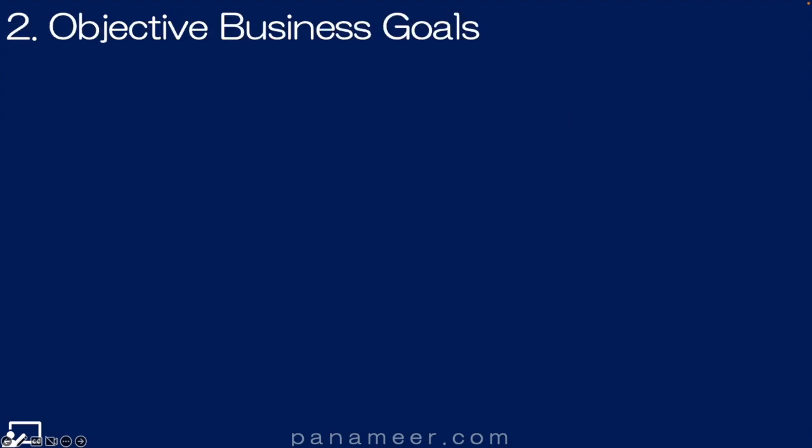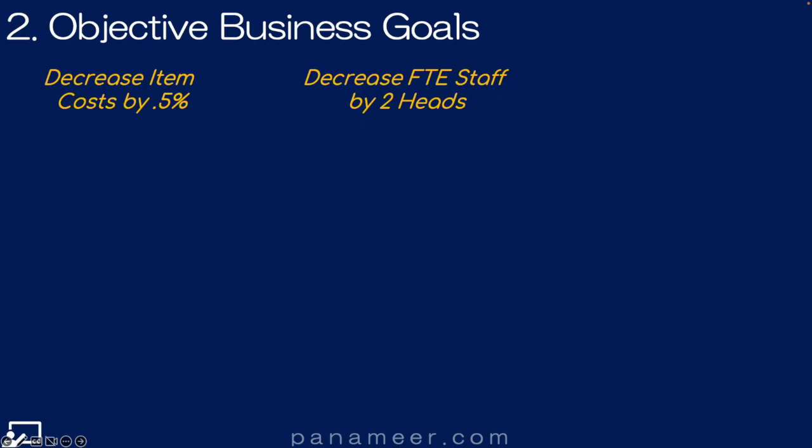Slide two: objective goals. Let's start by defining some objective business goals the organization wants to achieve. Most procurement organizations set goals like this annually. Here are three examples: decrease item costs by 0.5%, decrease FTE — full-time equivalent — staff by two heads, and decrease counterparty insurance risk.